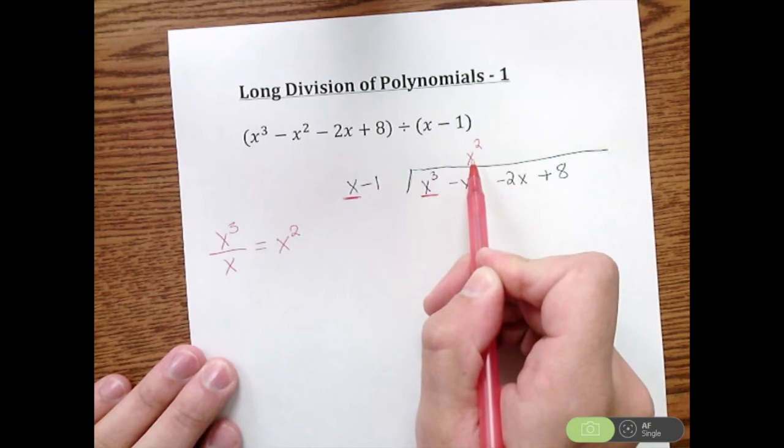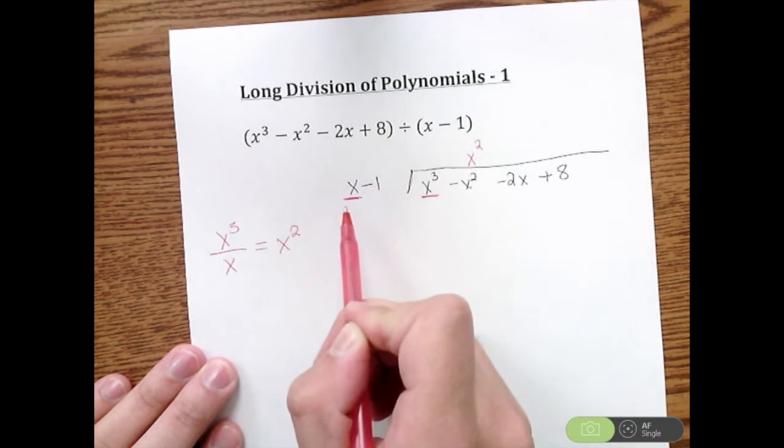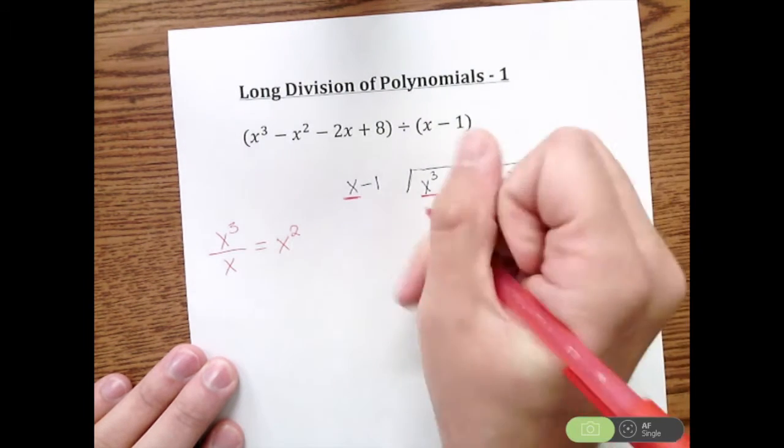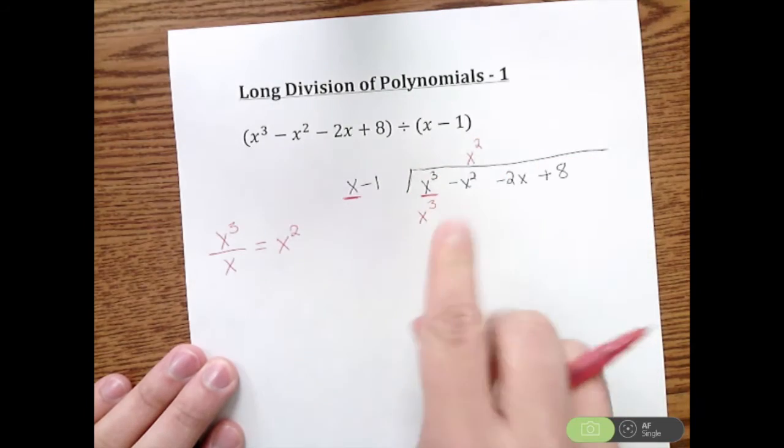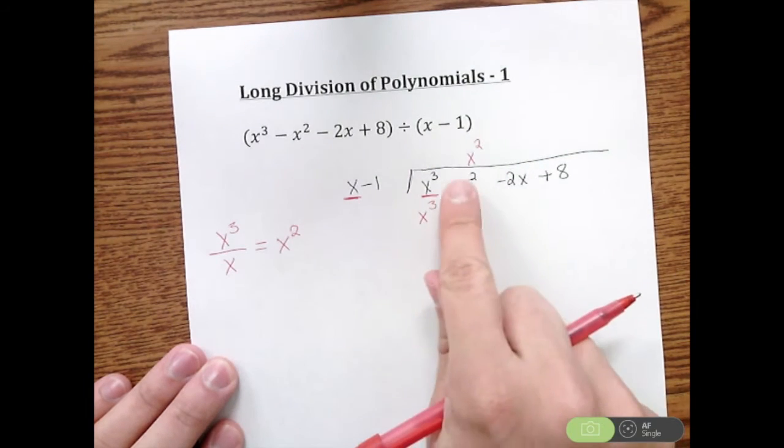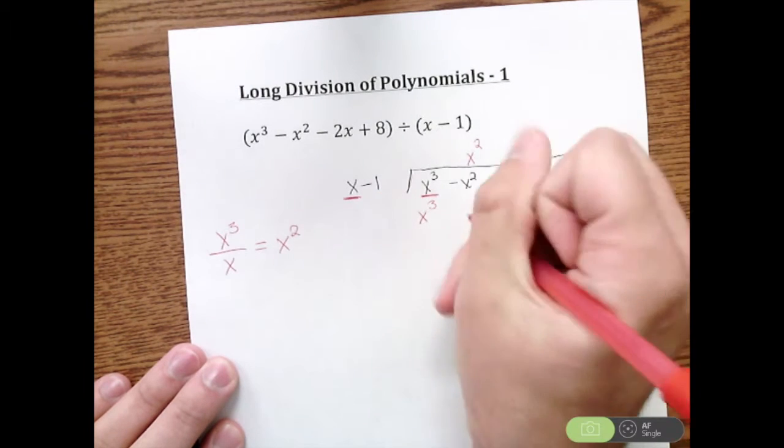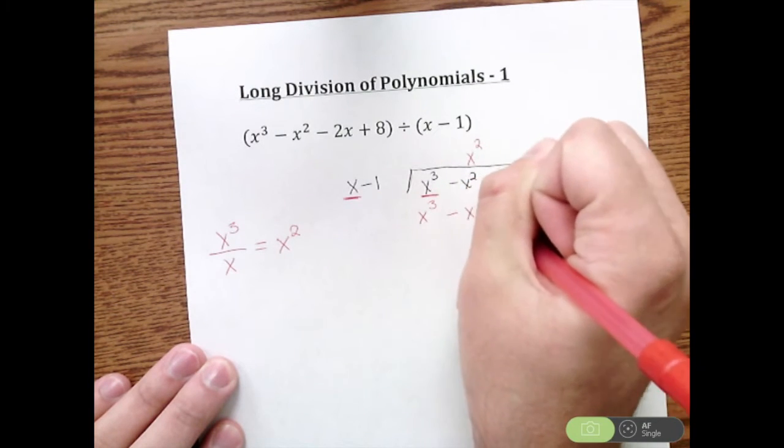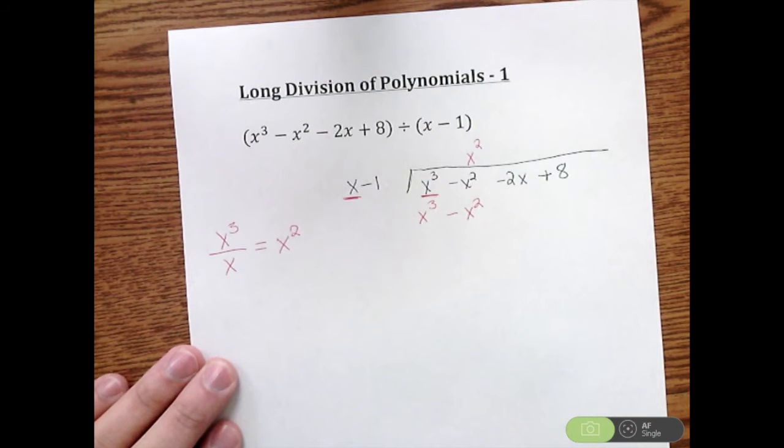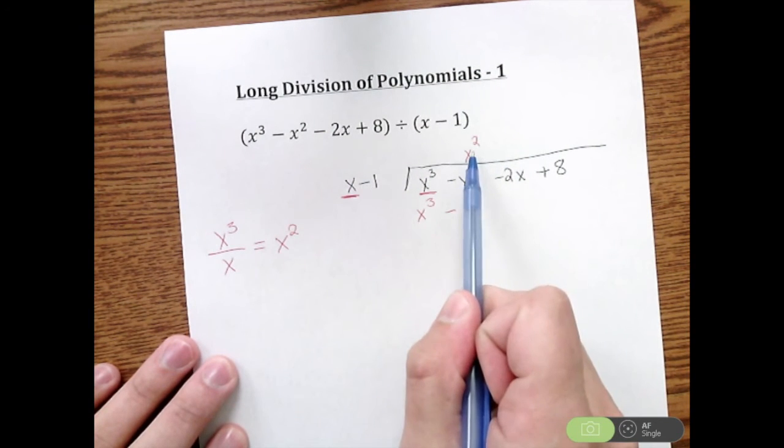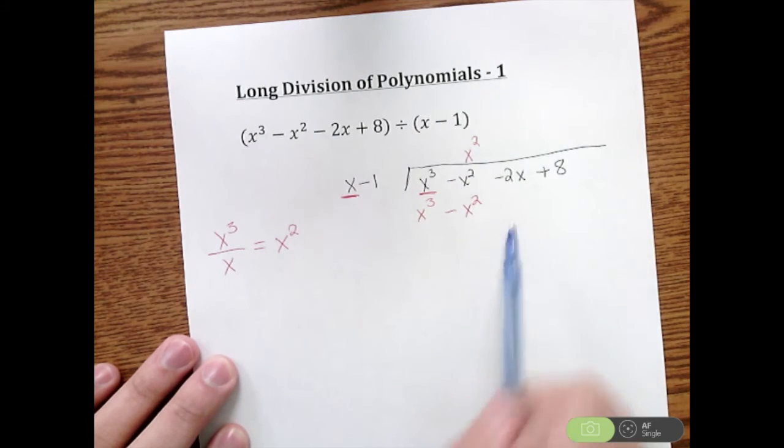After we do the division, we're going to take that X squared and we're going to multiply it through this piece right here. So X squared times X is X cubed. I'm going to start filling it in right here. X squared times a negative 1 is a negative X squared. So we did the division, write our term up top, multiply through, write it out.